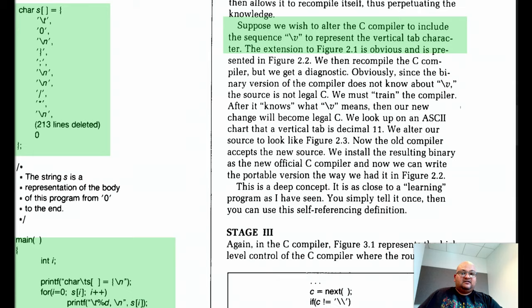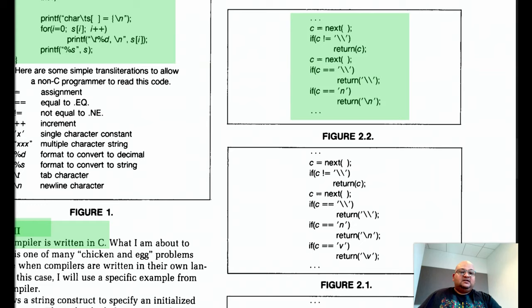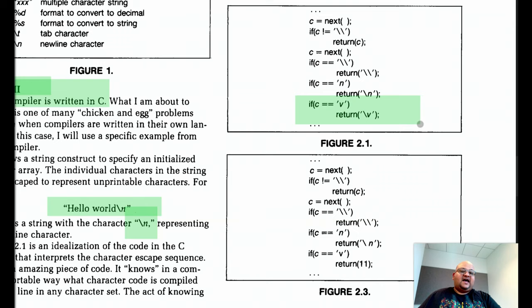Let's first look at the original source code. This is what the code for the original compiler would look like. It's looking for a slash, it's looking for an n, and so it recognizes slash n. What we really want is to add a clause like this so that the compiler recognizes slash v as well.